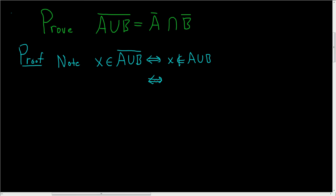So now we're saying that X is not in the union. If it's not in the union, it's not in A or it's not in B either. So this means that X is not in A and X is not in B.